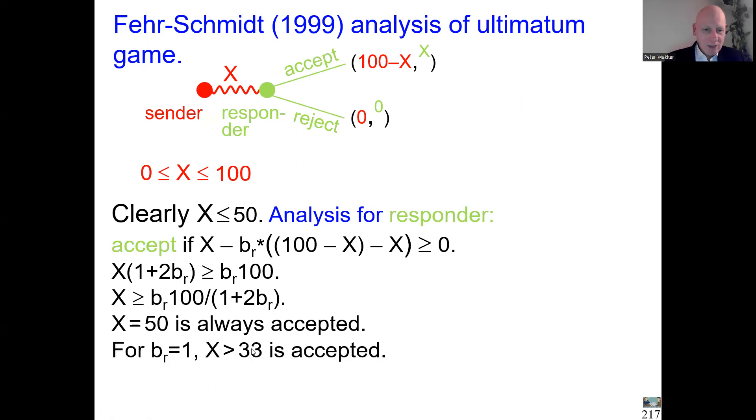Now we look a bit more. Let's assume a very big aversion to being behind of one. That's unrealistic, but let's assume, so the responder hates being behind. Then if we take b_r equal 1, then we get 100 over 3, that's about 33.33. So that means then only offers exceeding 33 are accepted. So this responder is very critical. Any offer below 33, it's a little bit unfair, already rejected. But this happens empirically, but not so much.